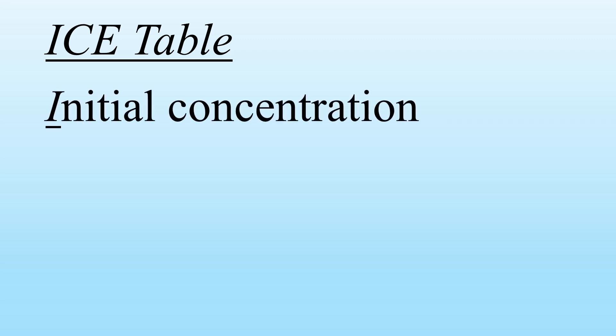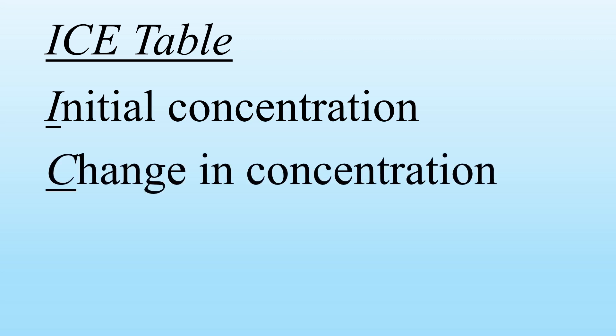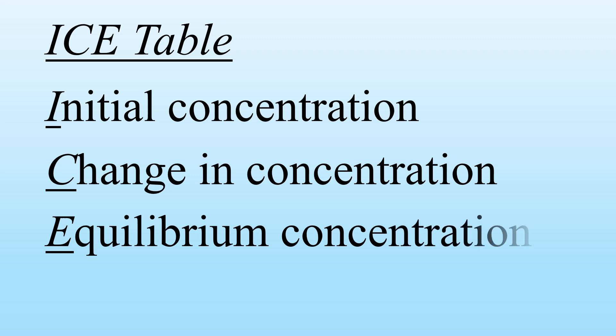I have discussed the ICE table in an earlier video, which you can see in the upper right-hand card link. ICE tables are used to simplify solving for equilibrium concentrations. I is for the initial concentration, C is for the change in concentration, and E is for the equilibrium concentration.